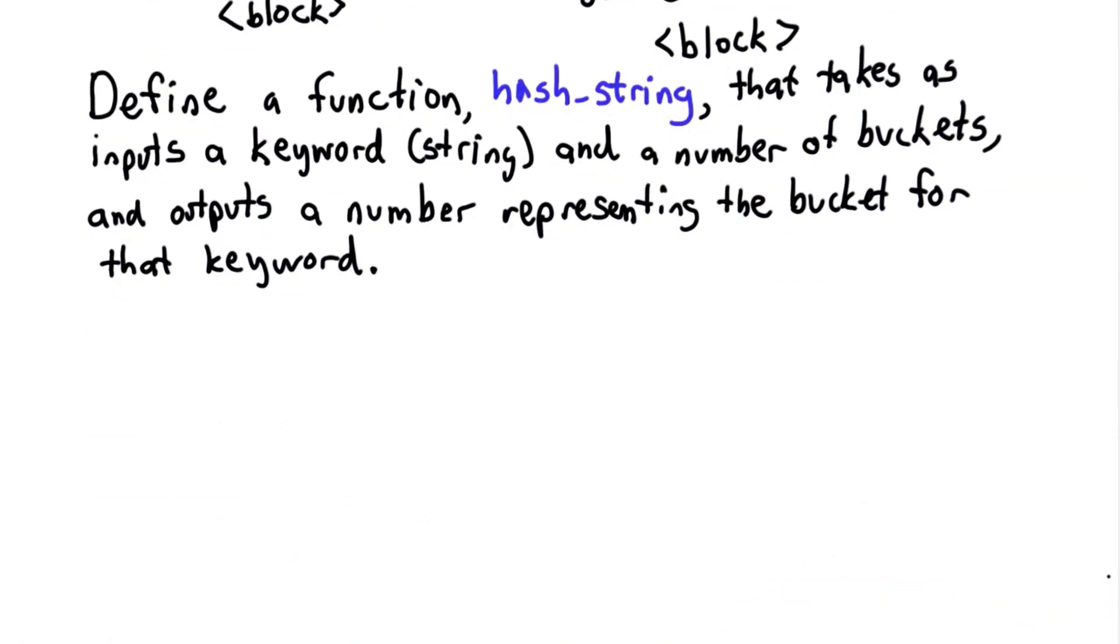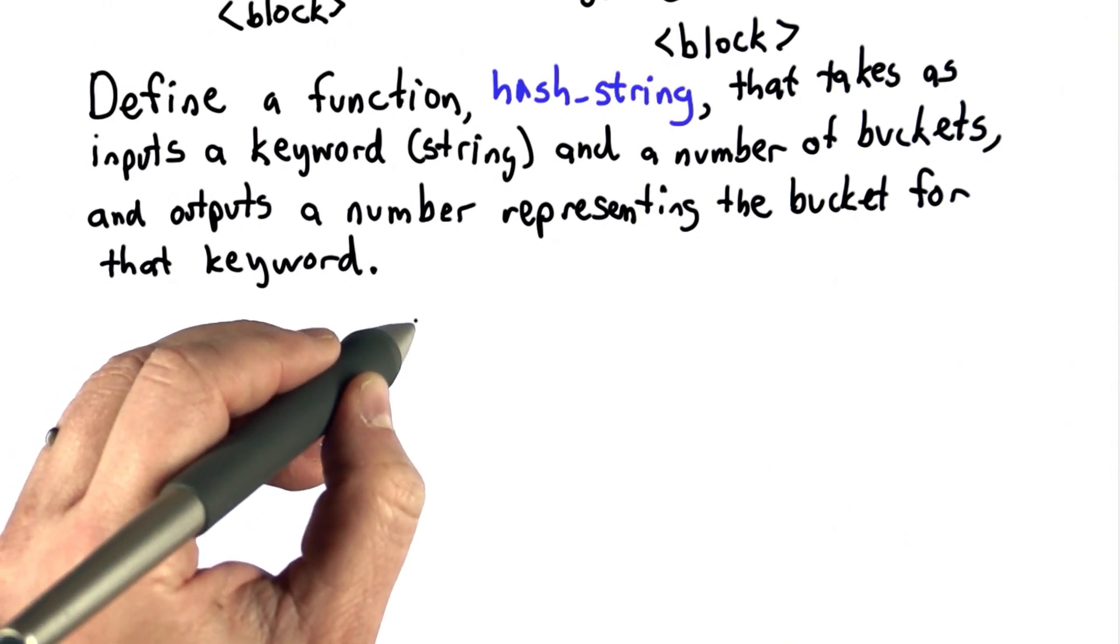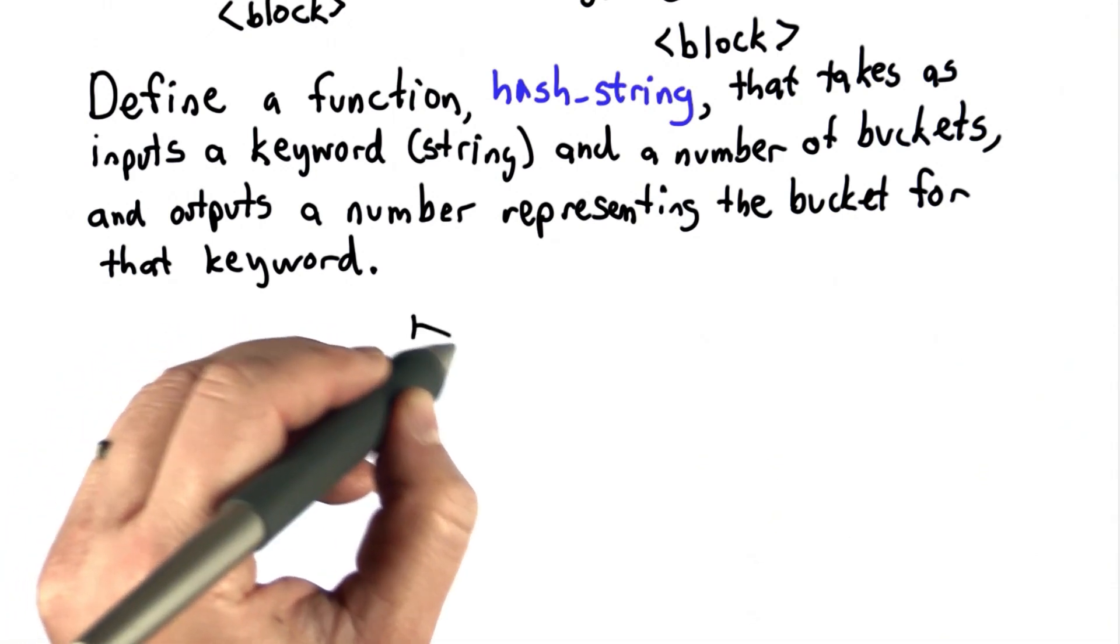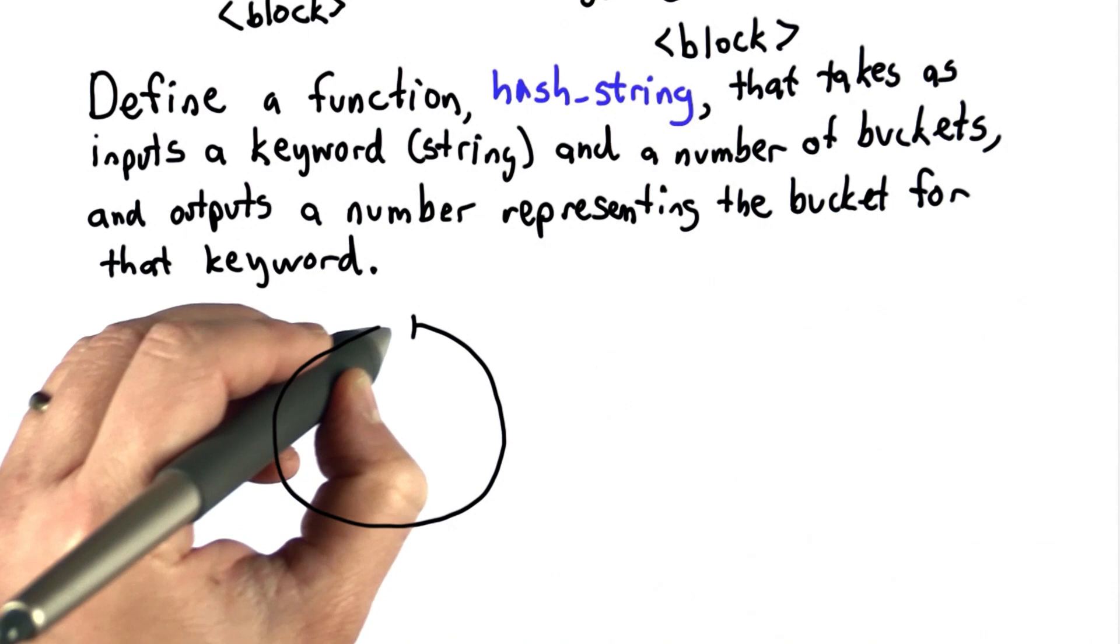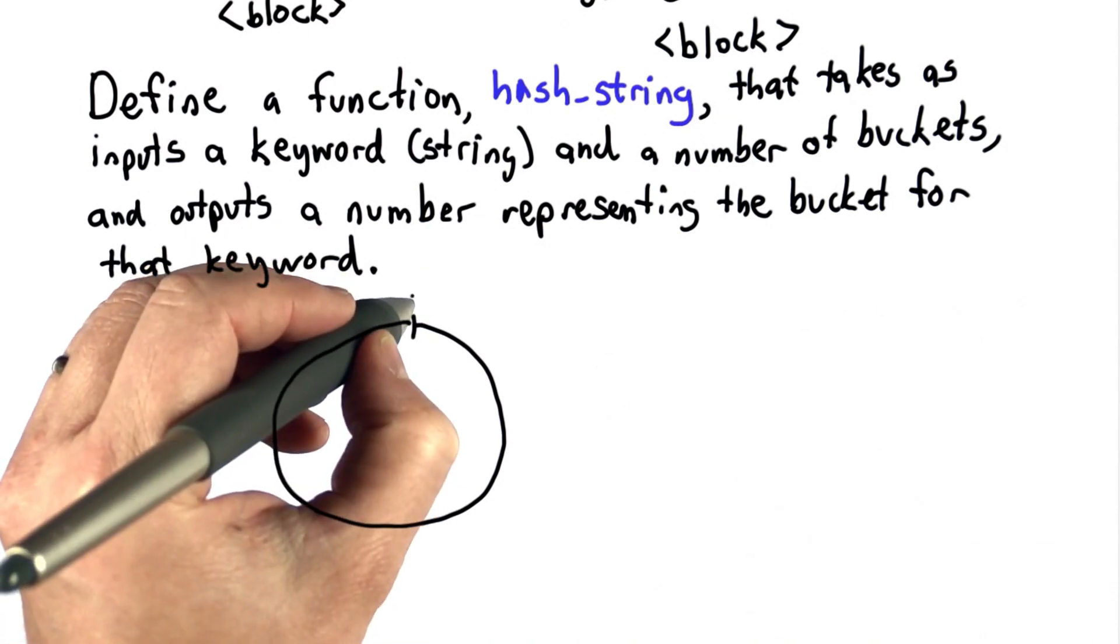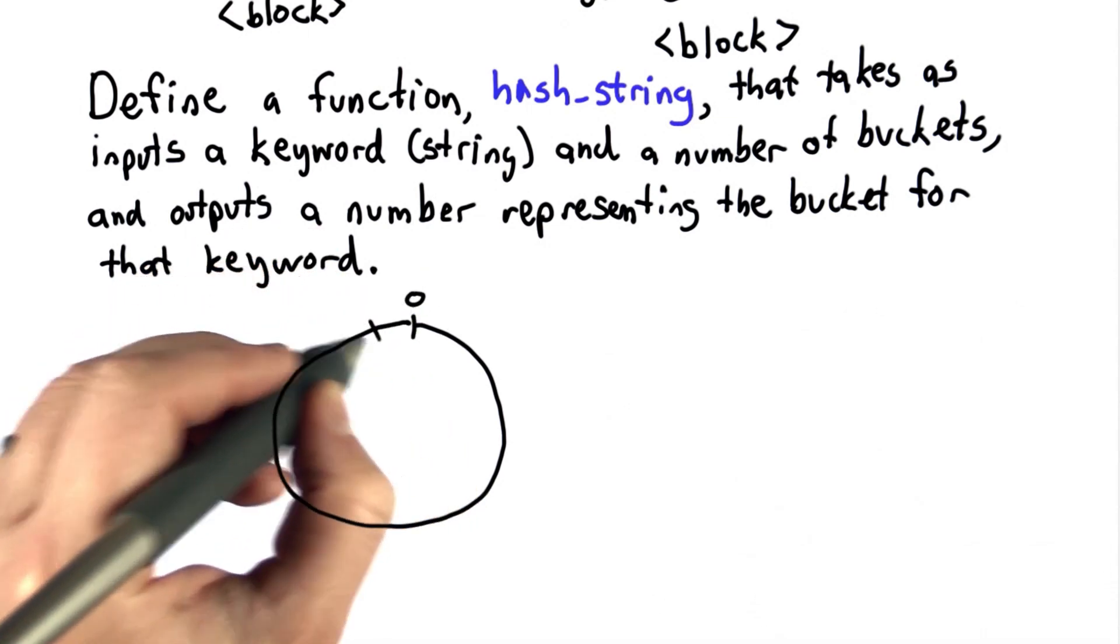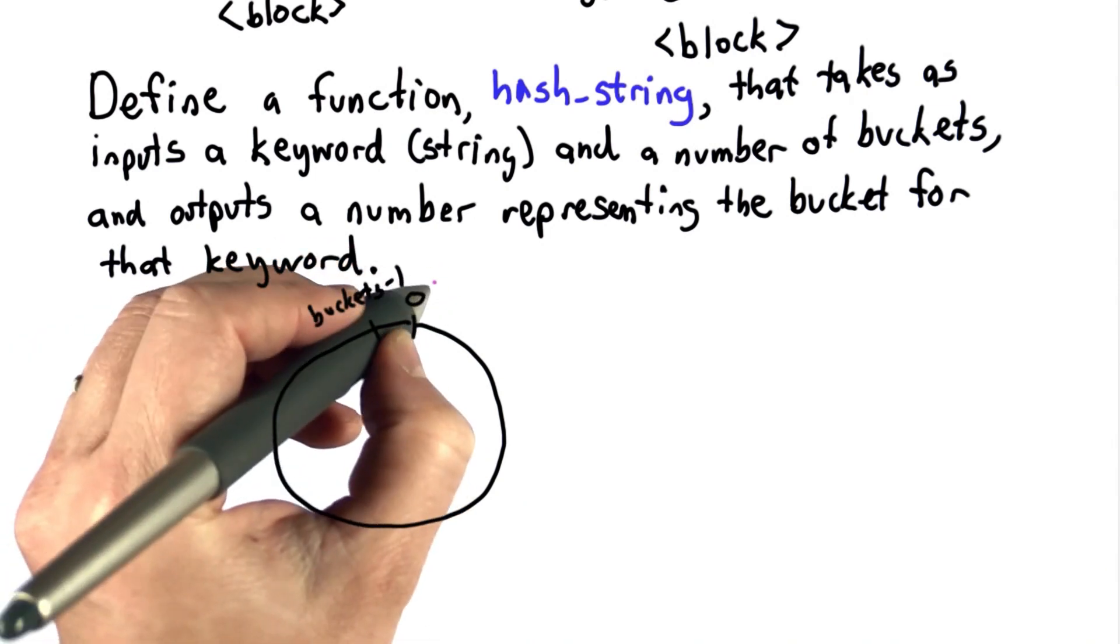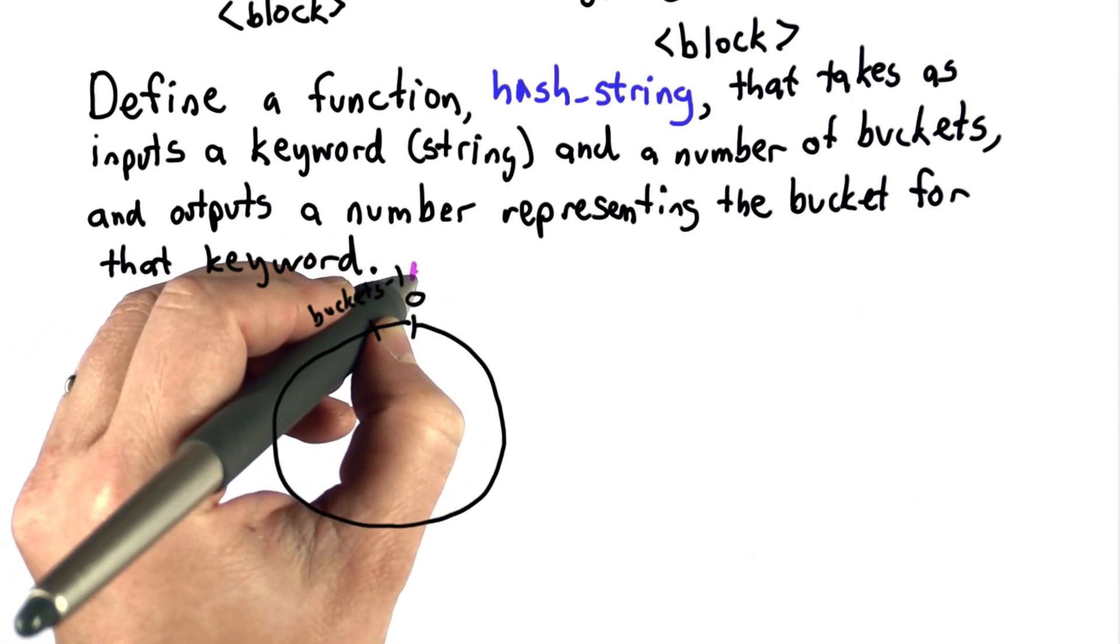We want to make the output of hash_string a function of all the characters, and we can think of that with modulo arithmetic. If we have a circle which is the size of the number of buckets, going from 0 to buckets minus 1, we're going to start at 0, and for each character in the string, we're going to go around ord of that character distance around the circle.